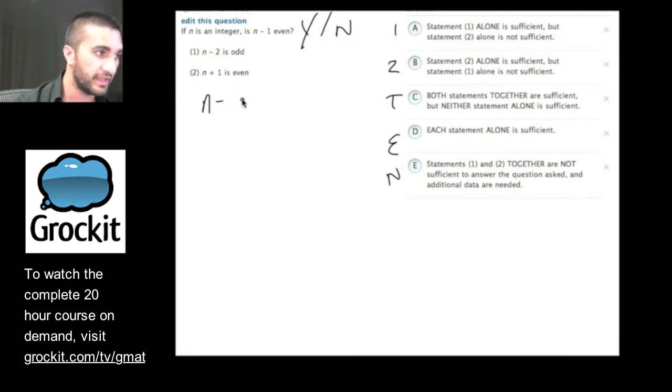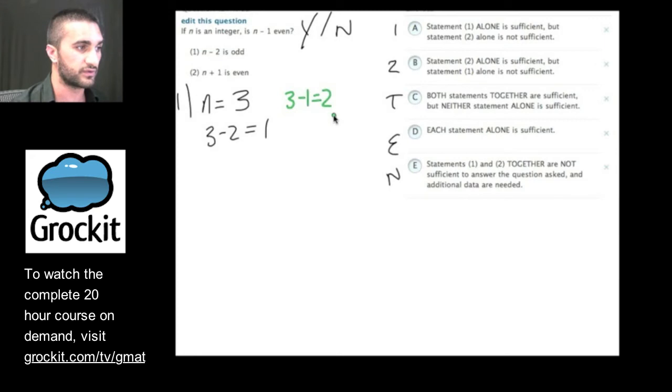Now, if n is an integer, so I've got to follow that rule. I can't use 0.25. If n is an integer, is n minus 1 even? So they say n minus 2 is odd. Well, let's pick a number so that we can satisfy this condition. Let's say n equals 3. And 3 minus 2 equals 1. So yeah, that makes sense. I pick the number here that works. n minus 2 is odd. Now, if I plug this value of n into here and ask myself, is it even? I get 3 minus 1 equals 2. And the answer is yes, it is even.